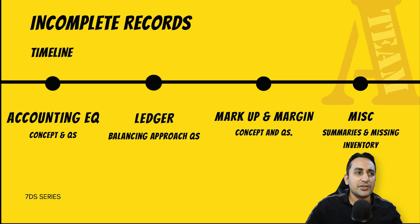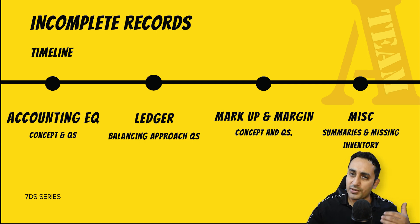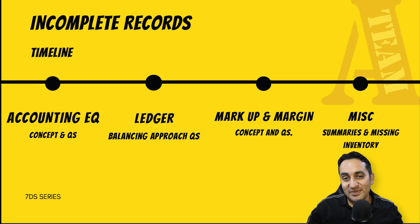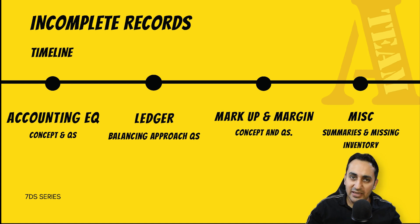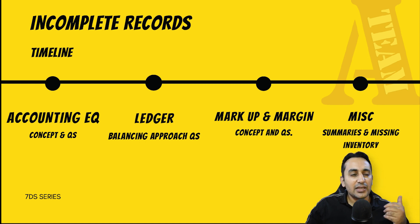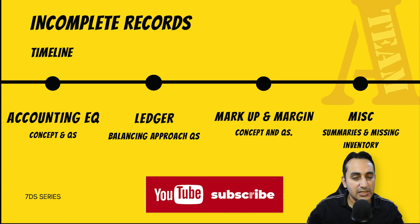यहाँ पर essentially four types of questions आ सकते हैं, जिन्हें हम practice भी करेंगे। पहला है accounting equation, जो शुरू में हमने पढ़ी थी, उसके base पे कुछ सवाल आ सकते हैं। दूसरा है ledger - receivables और payables के ledger के base पे question आ सकते हैं, missing figure निकालने के लिए।